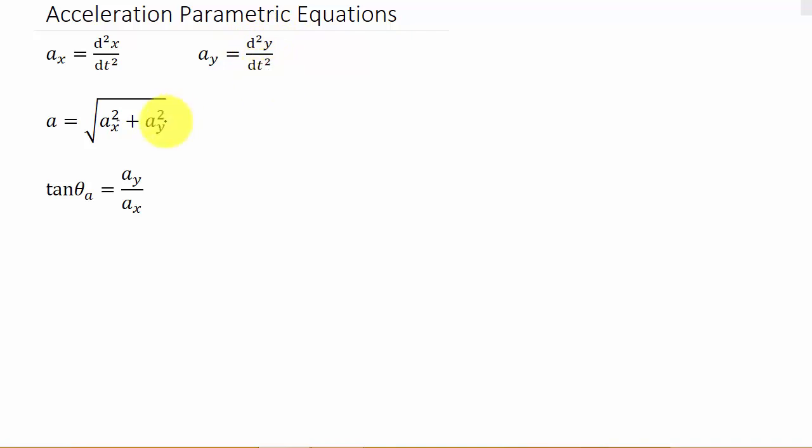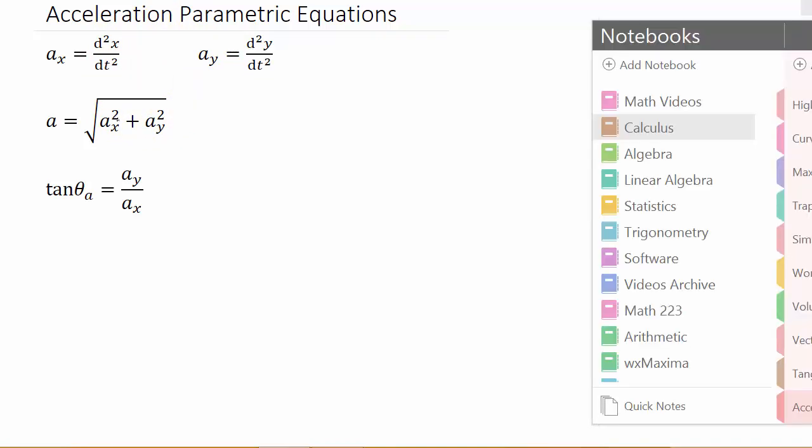The first derivative would be the velocity. I have a separate video on velocity of parametric equations you can check out. Let's go ahead and get started and look at our example.